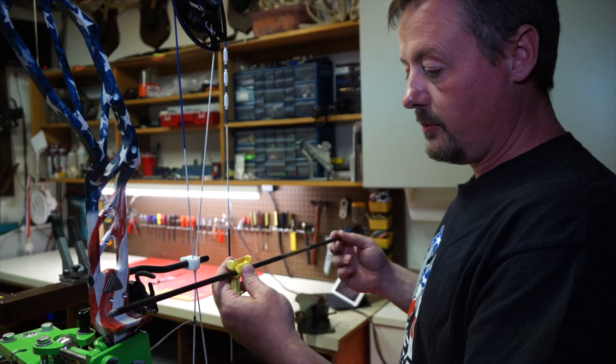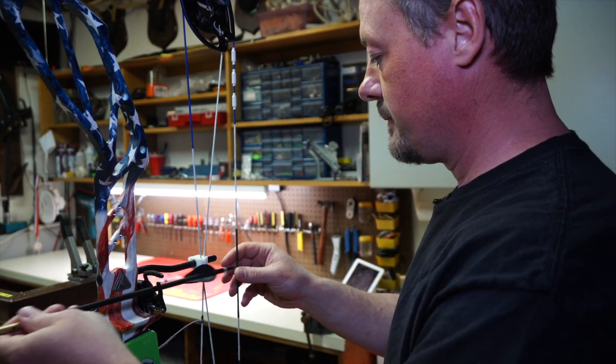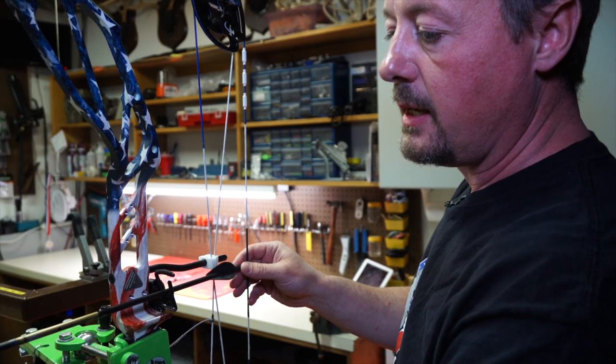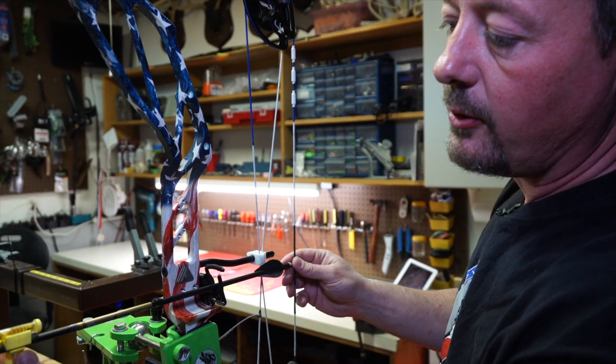I then take an arrow with the arrow bubble level on it, put it on the string, and get my arrow level.